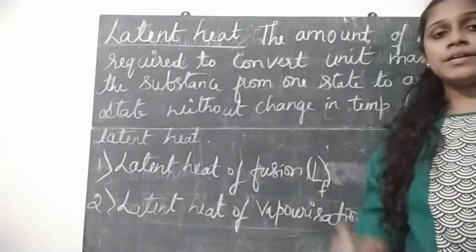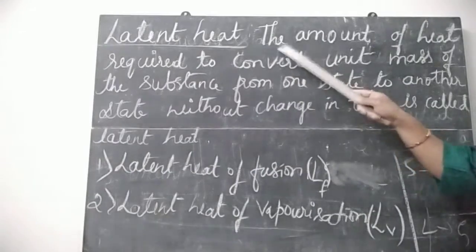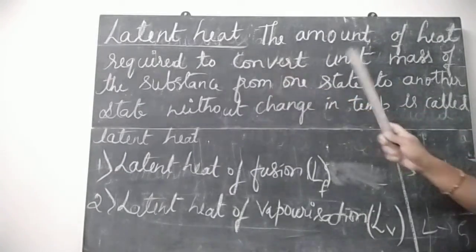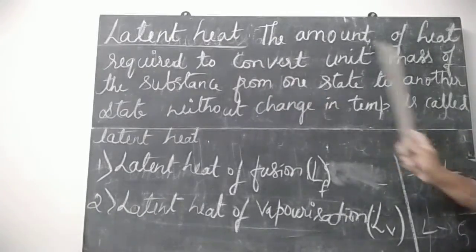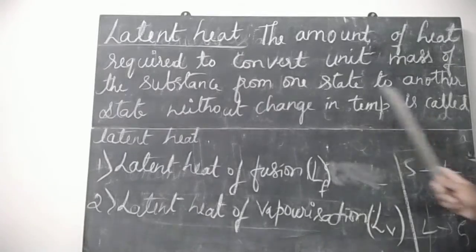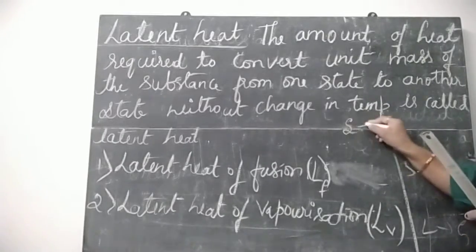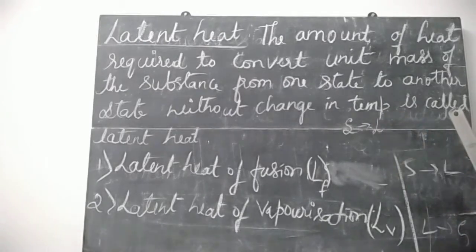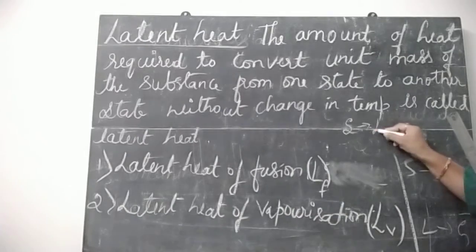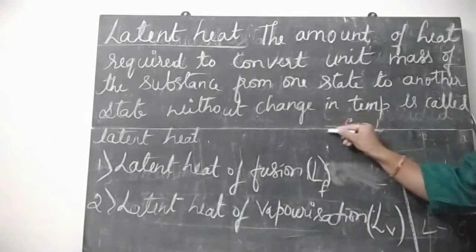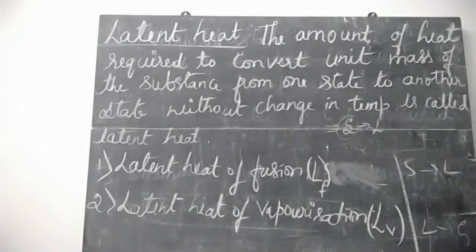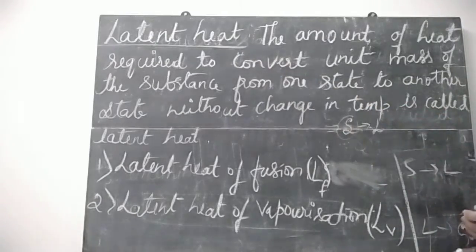Next, let us go to latent heat. Latent heat means the amount of heat required to convert unit mass of a substance from one state to another state without change in temperature is called latent heat. So to convert a substance from solid state to liquid state, that amount of heat energy supplied to the substance is called latent heat, and the temperature does not change.